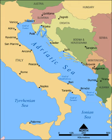The Adriatic Sea is a body of water separating the Italian peninsula from the Balkan peninsula. The Adriatic is the northernmost arm of the Mediterranean Sea, extending from the Strait of Otranto to the Northwest and the Po Valley. The countries with coasts on the Adriatic are Albania, Bosnia and Herzegovina, Croatia, Italy, Montenegro and Slovenia. The Adriatic contains over 1,300 islands, mostly located along its eastern Croatian coast.